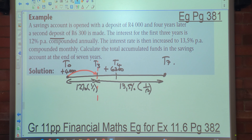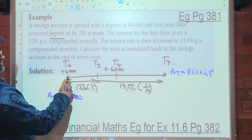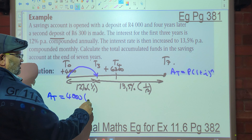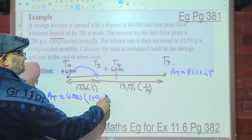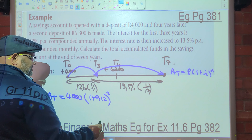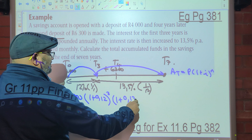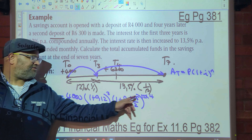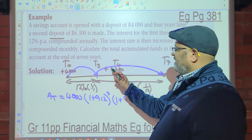But I'm going to do it all in one. The formula is: A total = P × (1 + i)^n — the compound interest formula. So A total = 4,000 × (1 + 0.12/1)^(3×1) — which is to the exponent 3 — then into (1 + 0.135/12)^(12×4 years). Four plus three is seven, as you can see. That takes R4,000 all the way to the end.